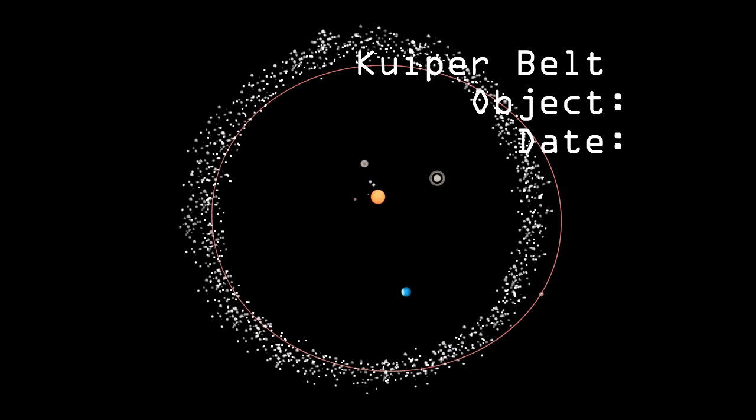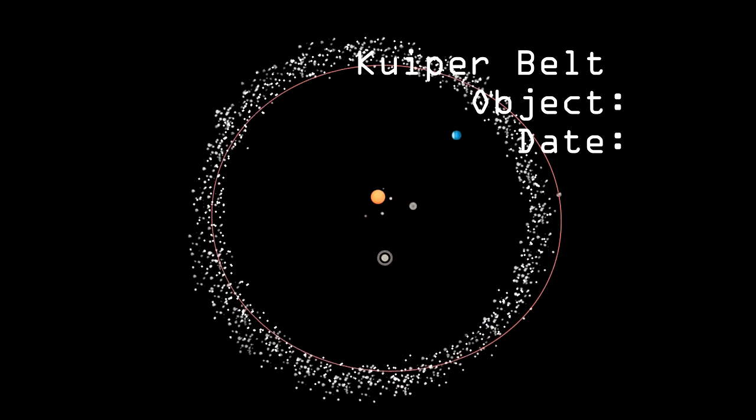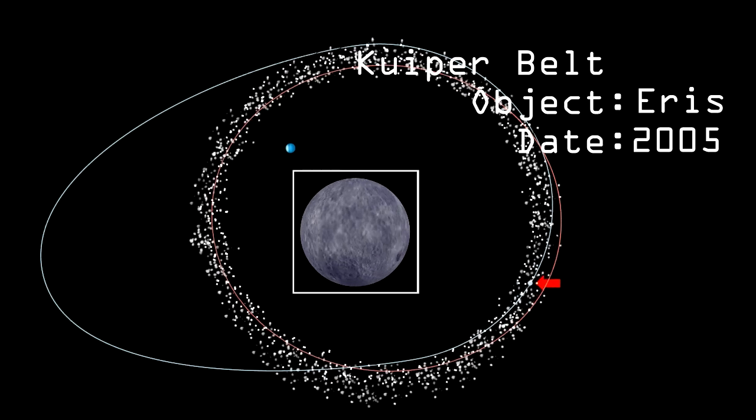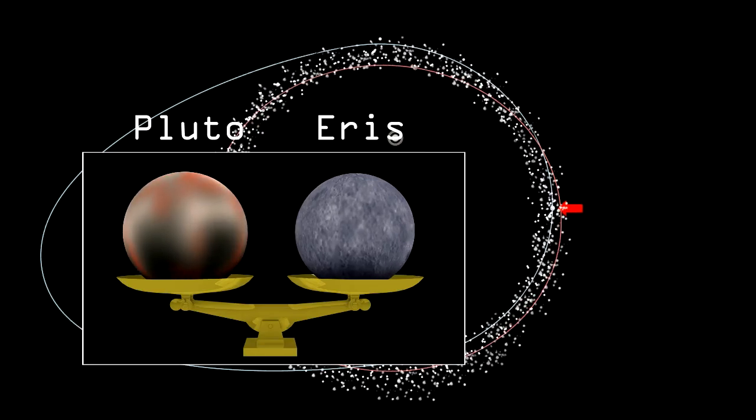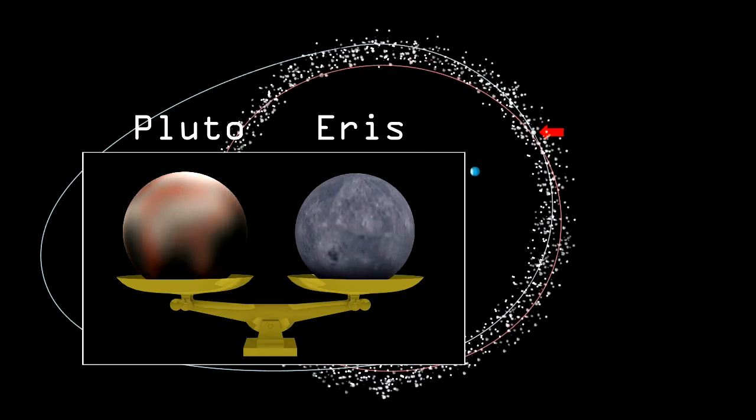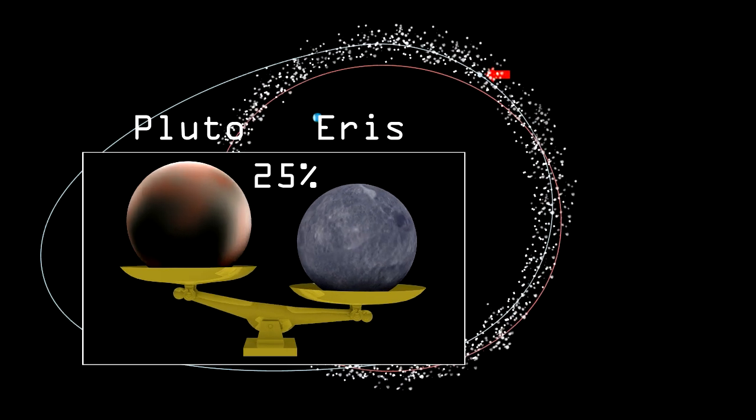Pluto's status as a planet was then put under even more pressure in January 2005, when Eris was discovered in the Kuiper Belt. Eris is practically the same diameter as Pluto, but its mass is around 25% more, due to its higher density.